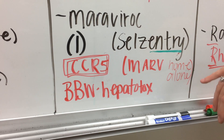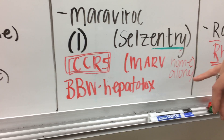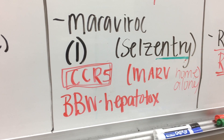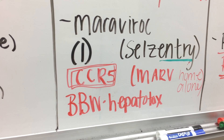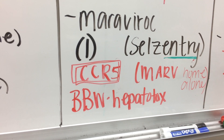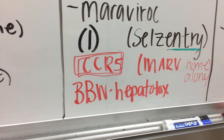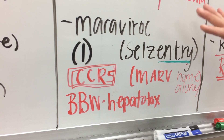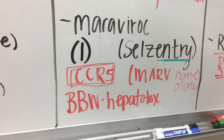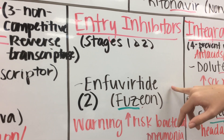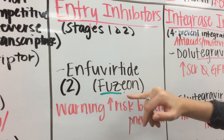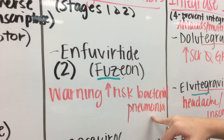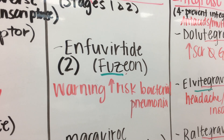A mnemonic for Maraviroc: for those familiar with Home Alone, one of the bad guys is named Marv, and Kevin tries to prevent Marv from entering the house — helping us remember Maraviroc preventing entry into the cell. This drug does have a black box warning for hepatotoxicity. Entry inhibitors are not recommended for treatment-naive patients. Moving to stage two, our fusion inhibitor, Fuzeon — you can see 'fuse' in the brand name — also has a severe warning of increased risk of bacterial pneumonia, so it is not recommended for treatment-naive patients either.